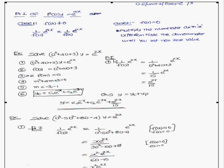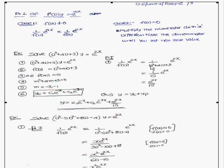The particular integral is 1/f(D) × e^(2x) = 1/(D² + 4D + 3) × e^(2x). Here a = 2. Substituting a = 2 into the denominator: 2² + 4(2) + 3 = 4 + 8 + 3 = 15. The denominator is non-zero, so by Case 1, the particular integral yp = e^(2x) / 15.